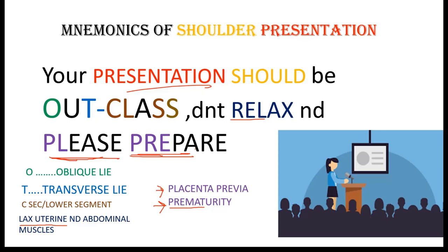Close your eyes, revise it two to three times and you are done. In summary: shoulder presentation occurs in oblique or transverse lie; management is c-section, generally lower segment; if there is molding around the uterus, do classical c-section. The key causes are lax uterine and abdominal muscles, placenta previa, and prematurity.